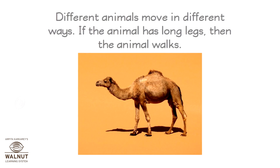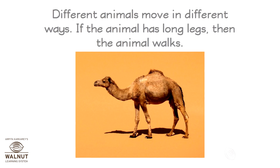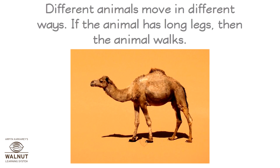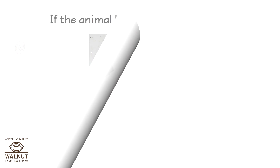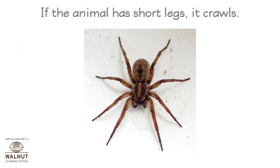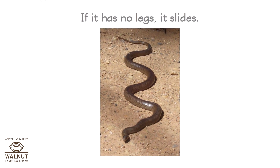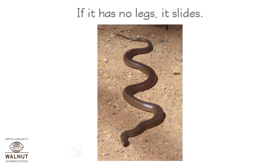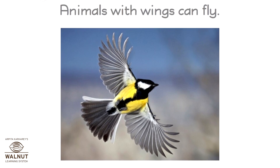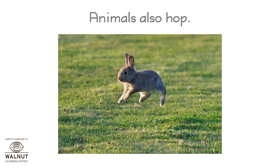Different animals move in different ways. If the animal has long legs, then the animal walks. If the animal has short legs, it crawls. If it has no legs, it slides. Animals with wings can fly. Animals also hop.